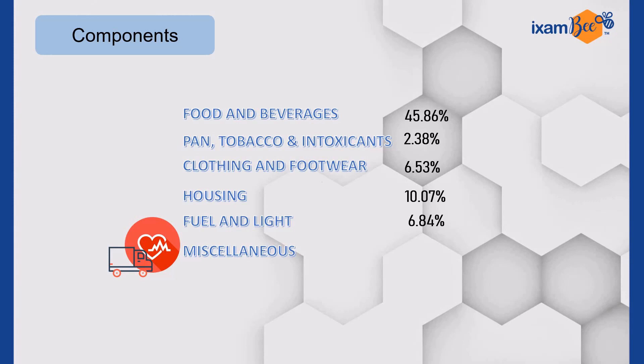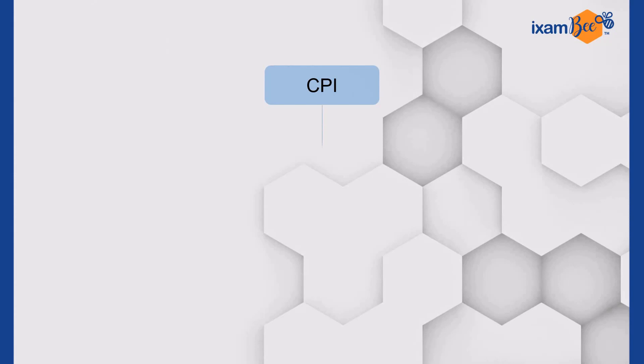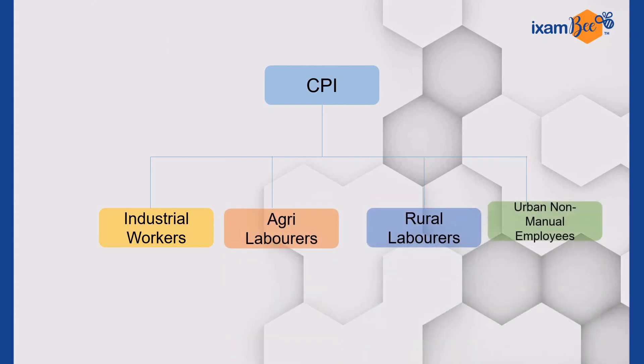In India, there are four types of CPI indexes that are released: Industrial Workers, Agri Laborers, Rural Laborers, and Urban Non-Manual Employees. CPI for the first three is released by the Labor Bureau, while the CPI for Urban Non-Manual Employees is released by the National Statistical Office.